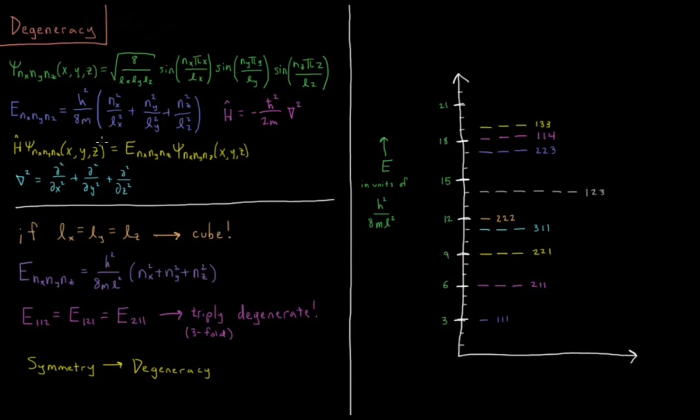In that case, all of these l's become just one big L and we can factor them out. We have e nx, ny, and z equals h squared over 8ml squared, nx squared plus ny squared plus nz squared.